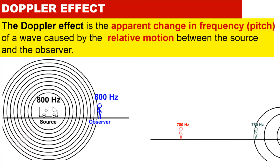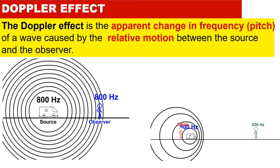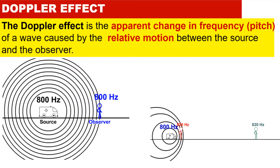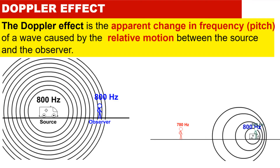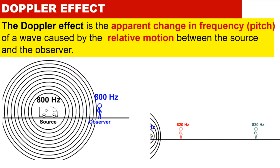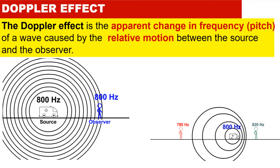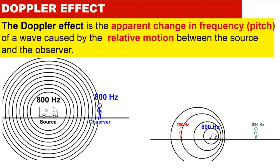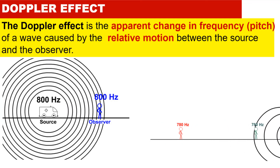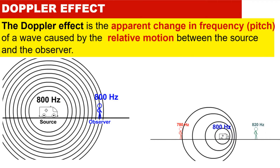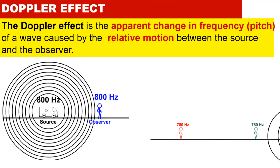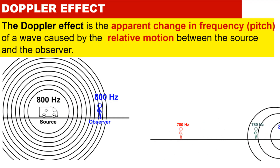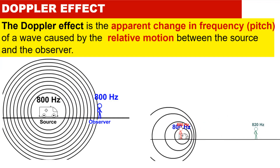The Doppler effect is all about the apparent change in frequency of a wave. It simply means that the frequency produced by a source and the frequency observed by a listener are different. This is because there is a relative motion between the observer and the source.